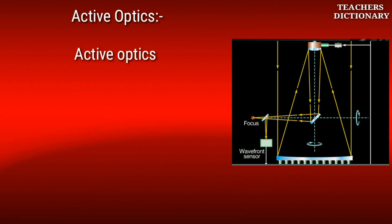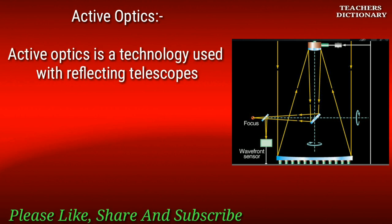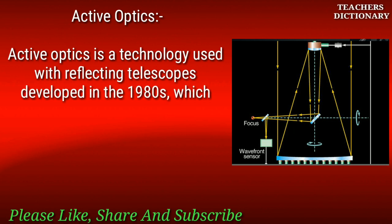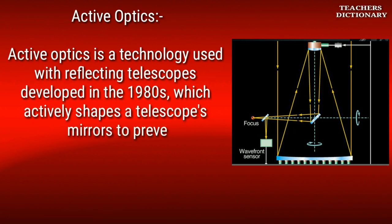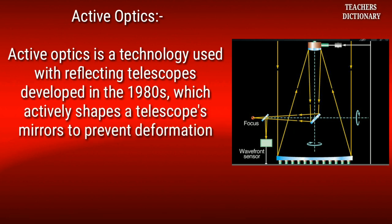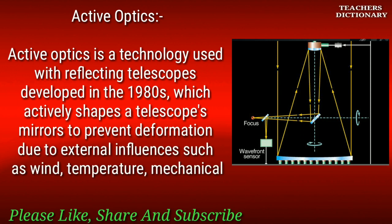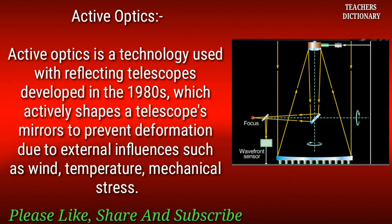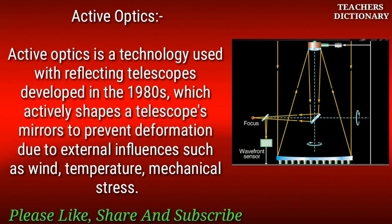Active optics: Active optics is a technology used with reflecting telescopes, developed in the 1980s, which actively shapes a telescope's mirrors to prevent deformation due to external influences such as wind, temperature, and mechanical stress.